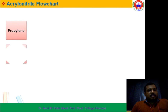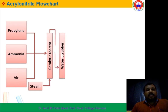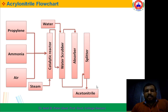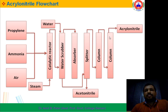In the flowchart portion, Propylene, Ammonia, and Air Oxygen react together in a catalytic reactor in the presence of steam, followed by water scrubbing. Finally, absorption and splitting of the byproduct Acetonitrile takes place — Acetonitrile is the byproduct of this reaction. It is removed, and finally the crude Acrylonitrile gets purified by column distillation to yield pure Acrylonitrile.